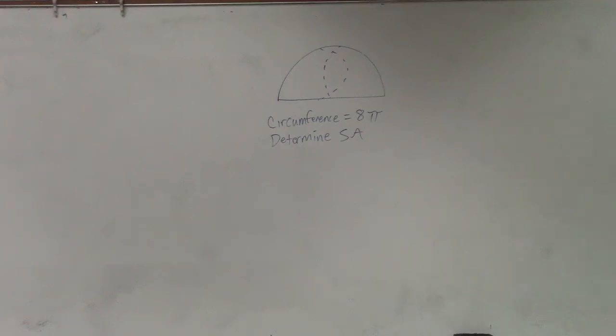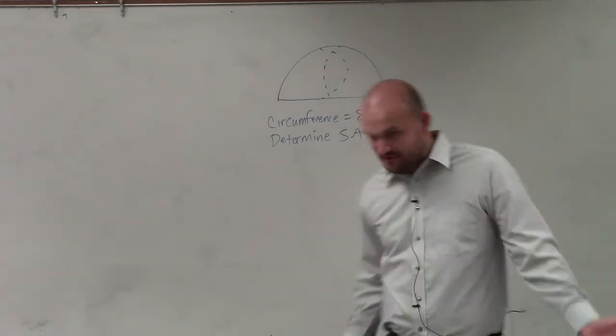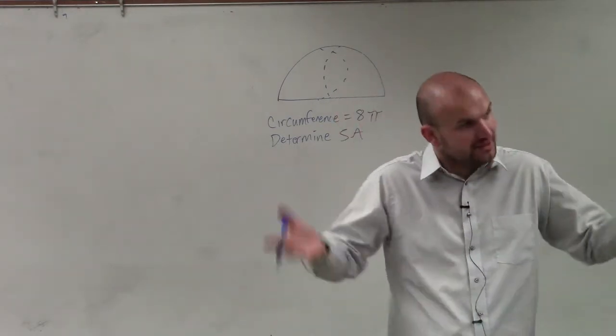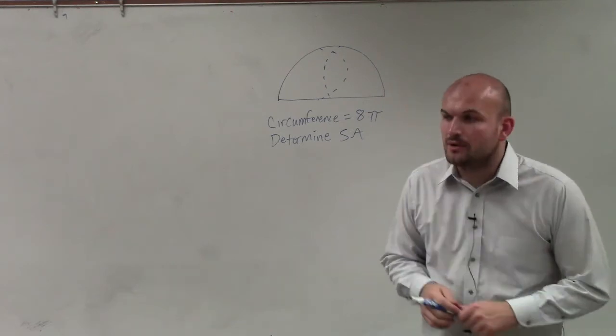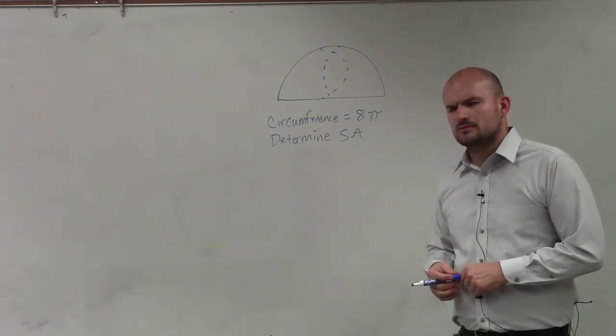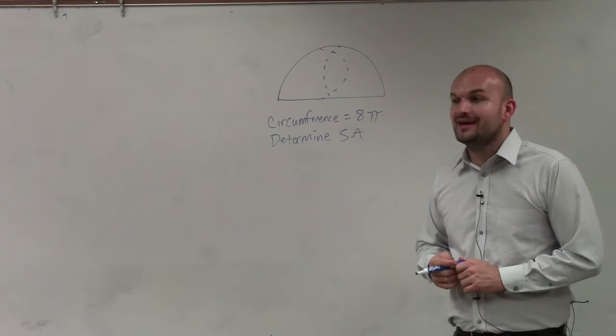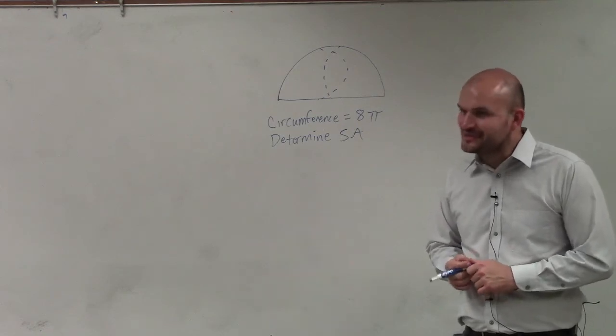All right. So in this case, what we have is half of a sphere, which we call a hemisphere. Half of a sphere is a hemisphere. So all this continues. Yeah, exactly. Isn't that amazing, where those come from?